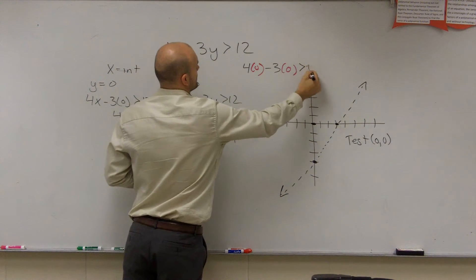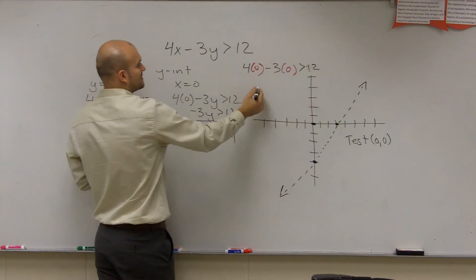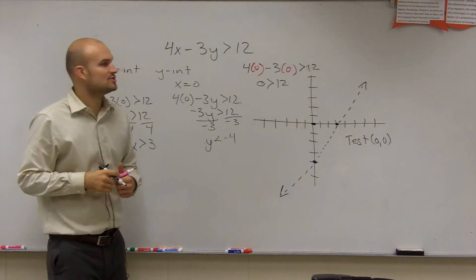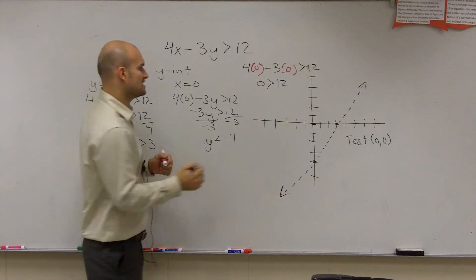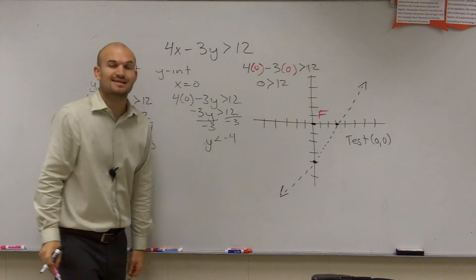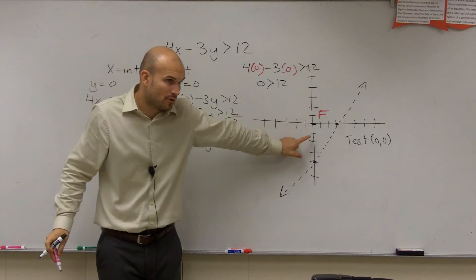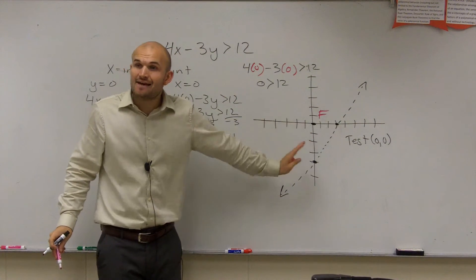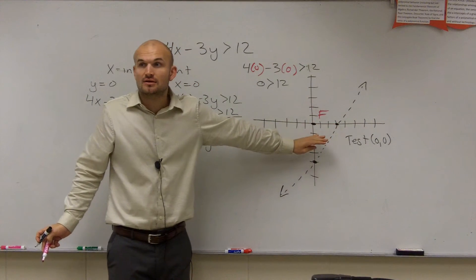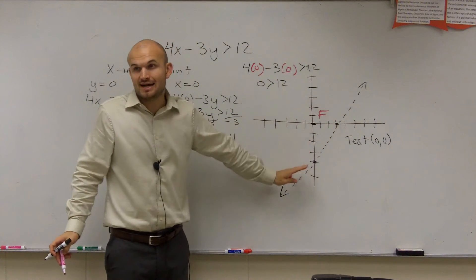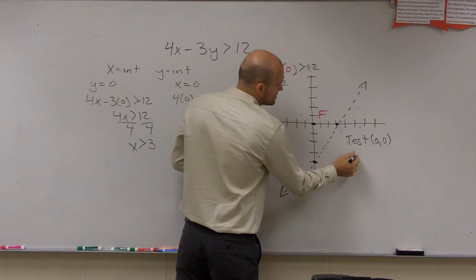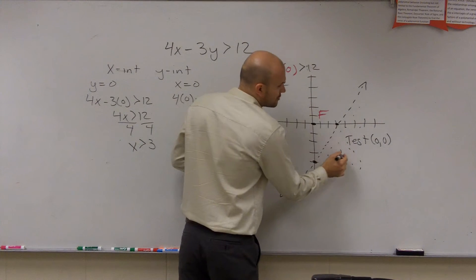That's not 12. Okay? That ends up getting 0 is greater than 12. Is 0 greater than 12? No. So that is false. So I put a nice big F right there on that point. That tells me that that point and every single point above that line is going to be false. So if every point above that line is going to be false, that means every single point below is going to be true.